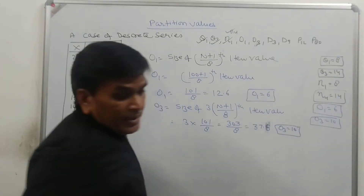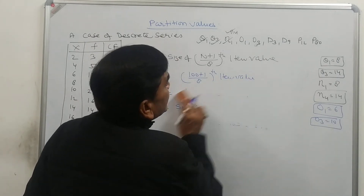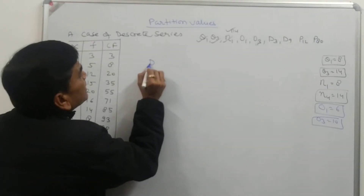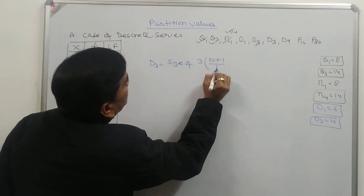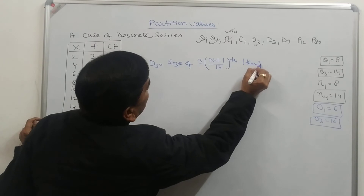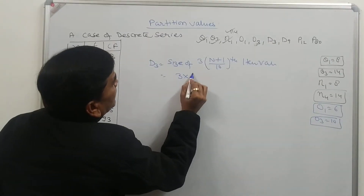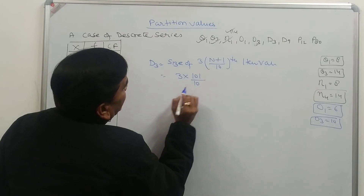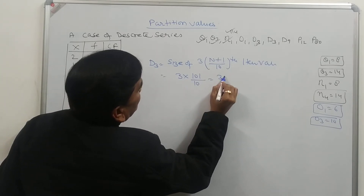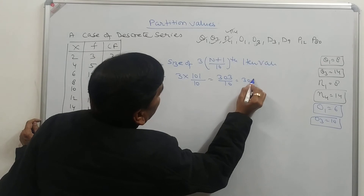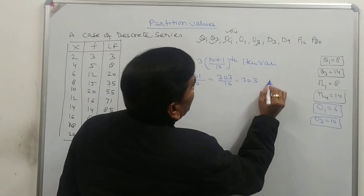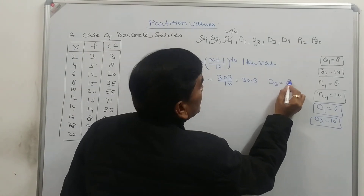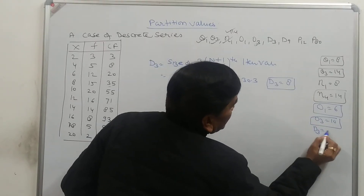Now we have to calculate the value of decile 3. In discrete series, decile 3 is equal to the size of 3(N+1)/10th item value. So 3×101/10 = 303/10 = 30.3. 30.3 first includes in CF 35, so the D3 value will be 8. D3 is equal to 8.